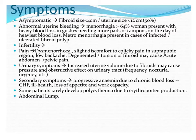Most fibroids, if smaller in size, are asymptomatic — that is, fibroid size less than four centimeters and uterine size less than 12 centimeters. These are present in 50 percent of cases and are asymptomatic. But if they are symptomatic, they can produce abnormal uterine bleeding, heavy menstrual loss, menorrhagia, and sometimes metromenorrhagia.